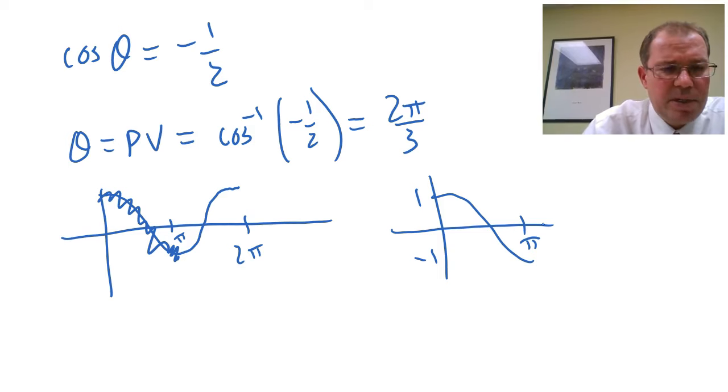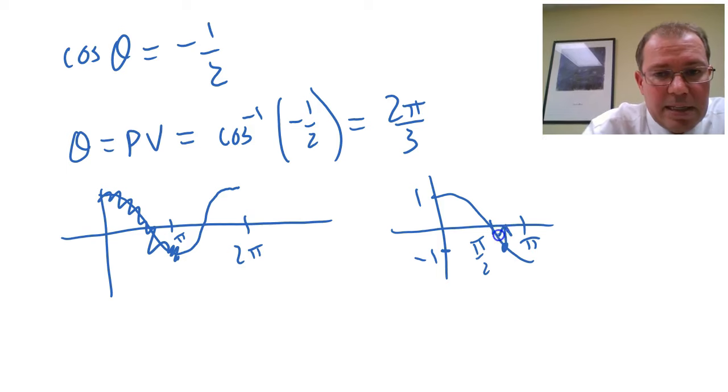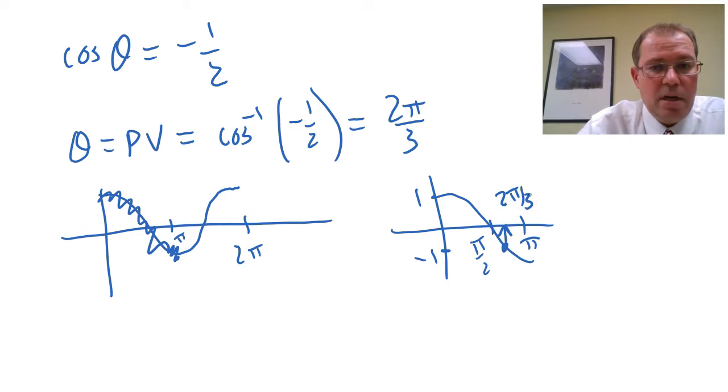So it's no surprise when we did cos inverse of minus a half, we got an answer between pi over two and pi over three, because here's minus a half, and clearly that's giving me the answer there, two pi over three. Now we've got one answer, we can find the secondary value.